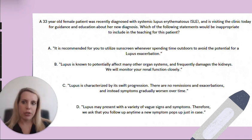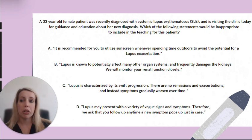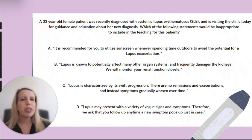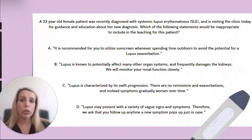Sun exposure is known to exacerbate lupus, and it's recommended that lupus patients utilize sunscreen to prevent an exacerbation from occurring. So option A is correct — let's eliminate that, since we want the incorrect option. In addition, lupus is known to have various effects on the entire body, and oftentimes it's the kidneys that are affected. Lupus nephritis occurs in about up to half of all lupus patients. So that would eliminate option B as well — it's also correct.